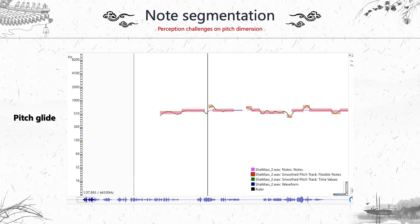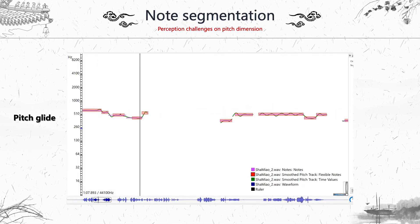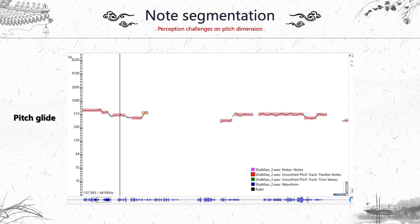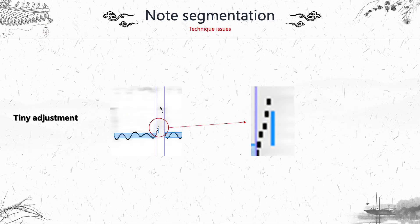Another perception challenge in note segmentation is pitch glide. In the picture there is a pitch glide, and some people can perceive it as two separate notes while others cannot. It's very short and hard to perceive. Suffering from this perception uncertainty and complexity, doing annotations on the interface can be very tough. Zhao Xin found a very short note she had made by mistake while trying to accurately adjust the onset of a note — she didn't notice the error at the time. Using a mouse for annotation is annoying and tiring. More natural interaction, like voice control, is what we hope for.